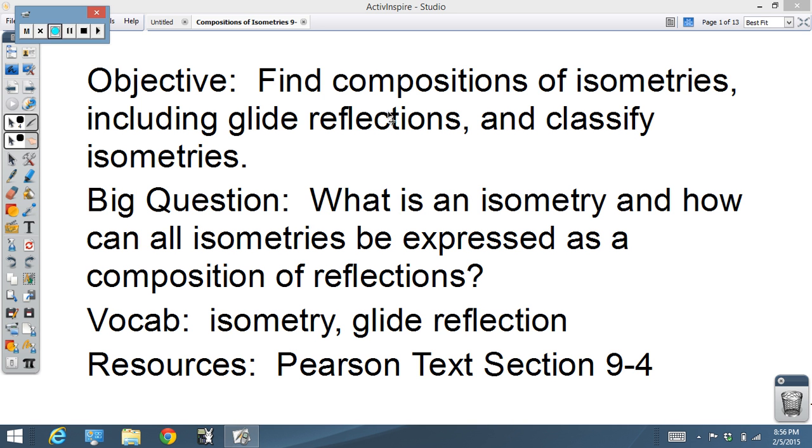Hi all, section 9-4 coming up here. We're going to be talking about compositions of isometries, which is kind of a fancy word for basically what we've been doing. We'll define an isometry, which includes exactly what we've been doing: reflections, rotations, and translations. There's a fourth kind of isometry, glide reflections, which we'll talk about later, and we'll classify them and learn some cool things about them. So let's get into it.